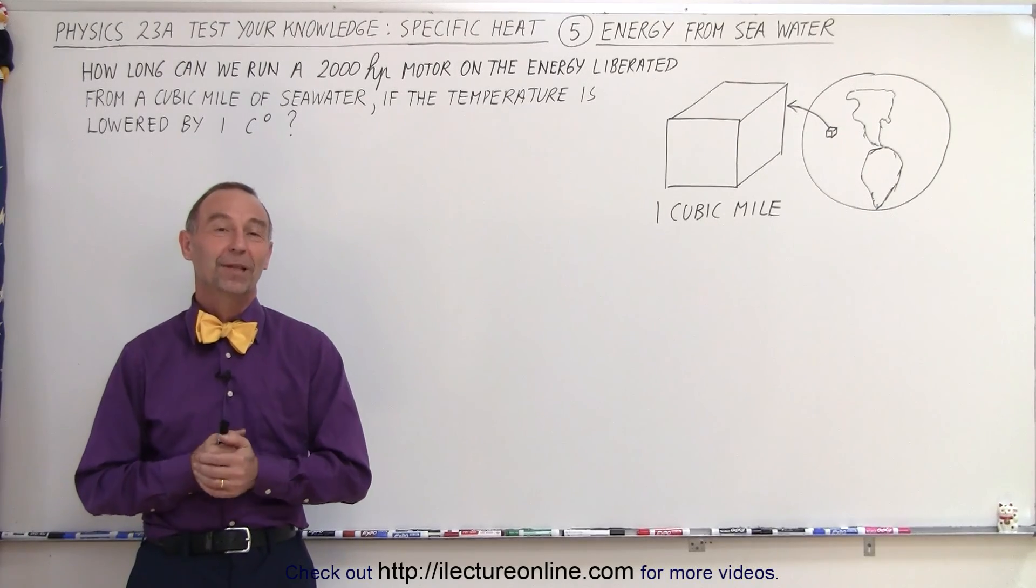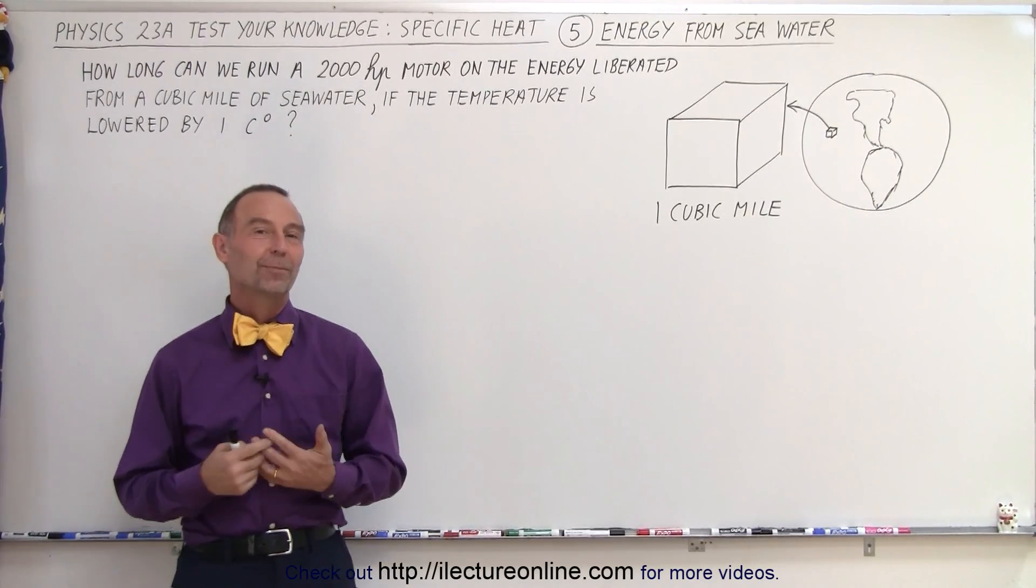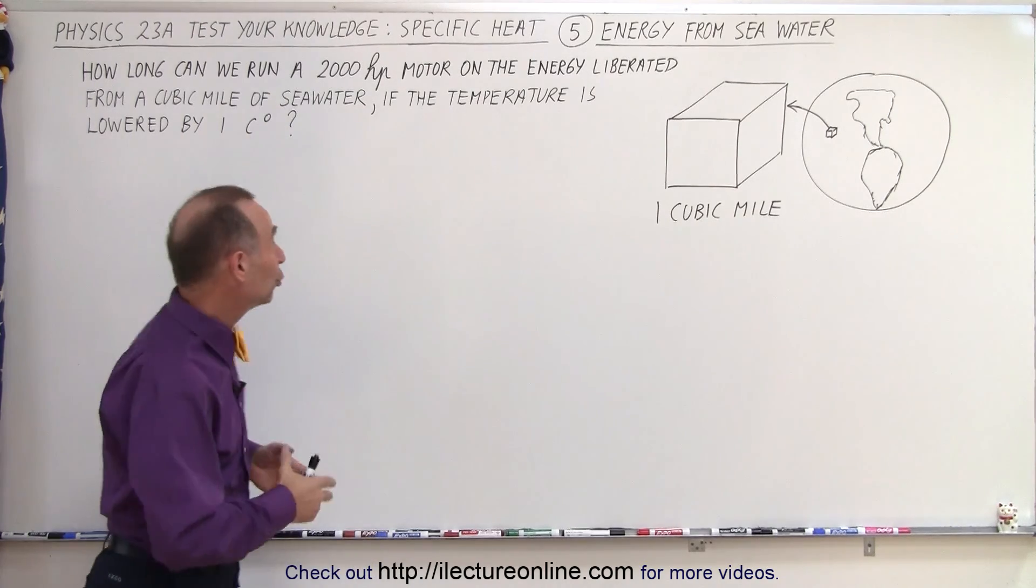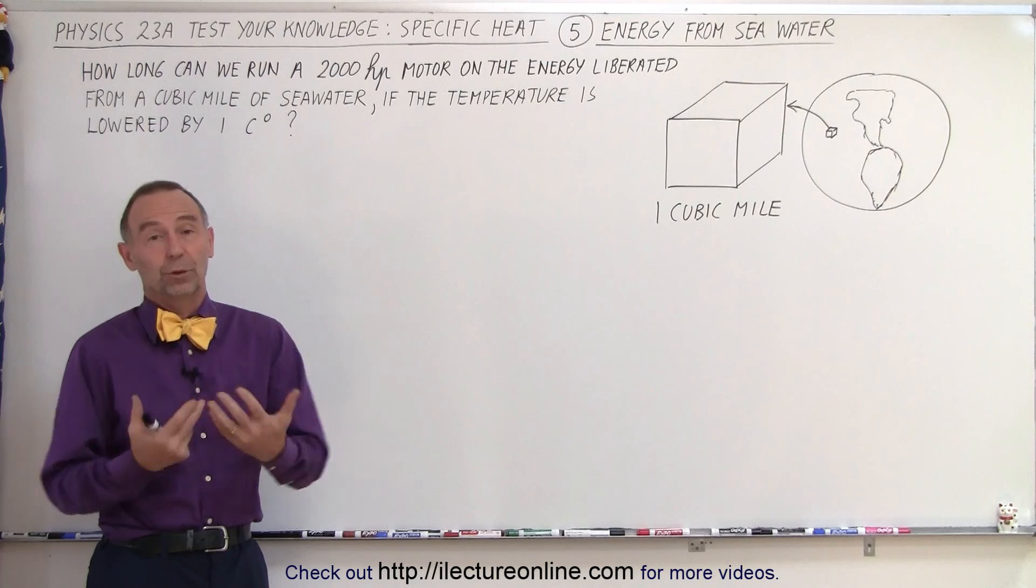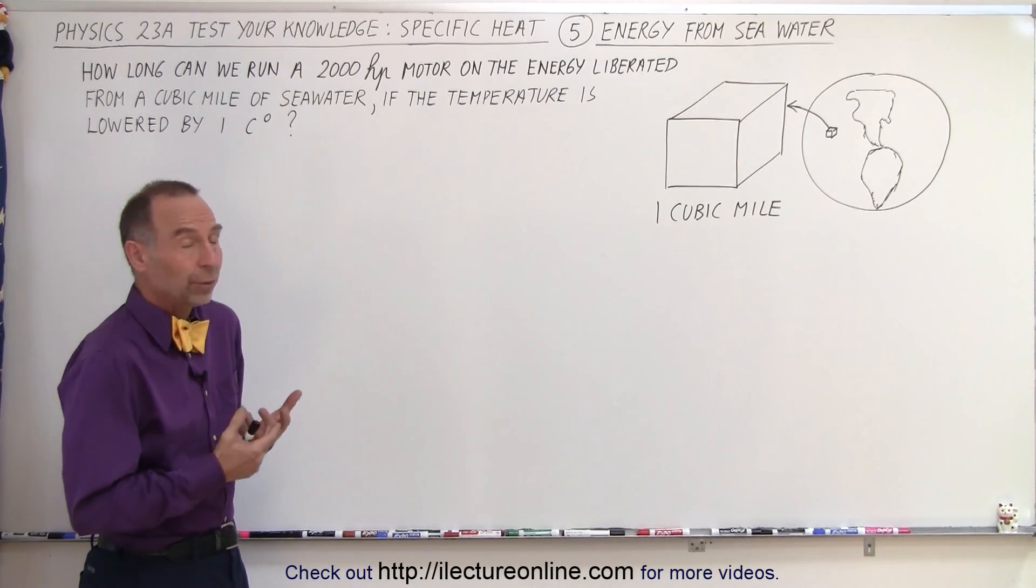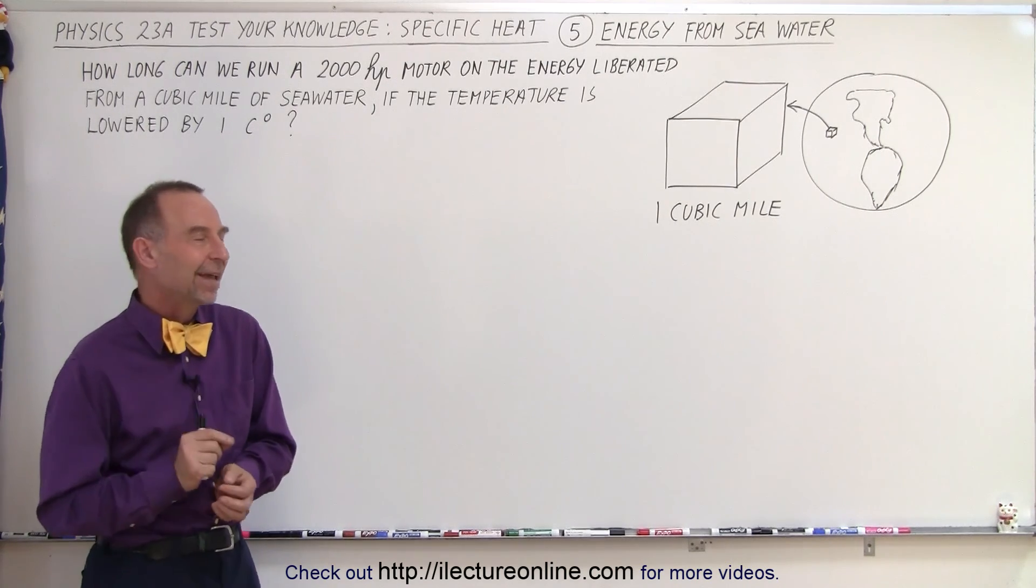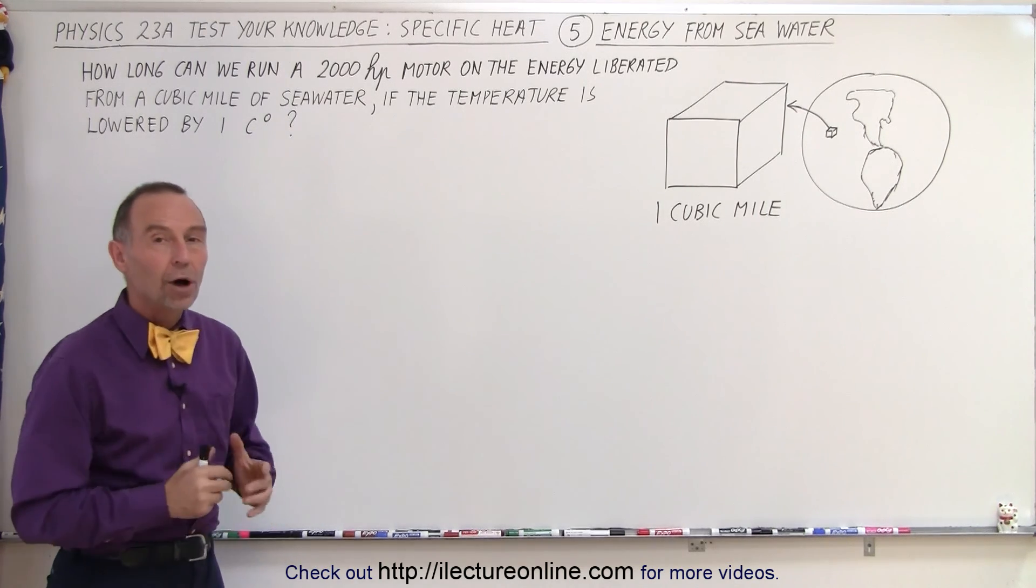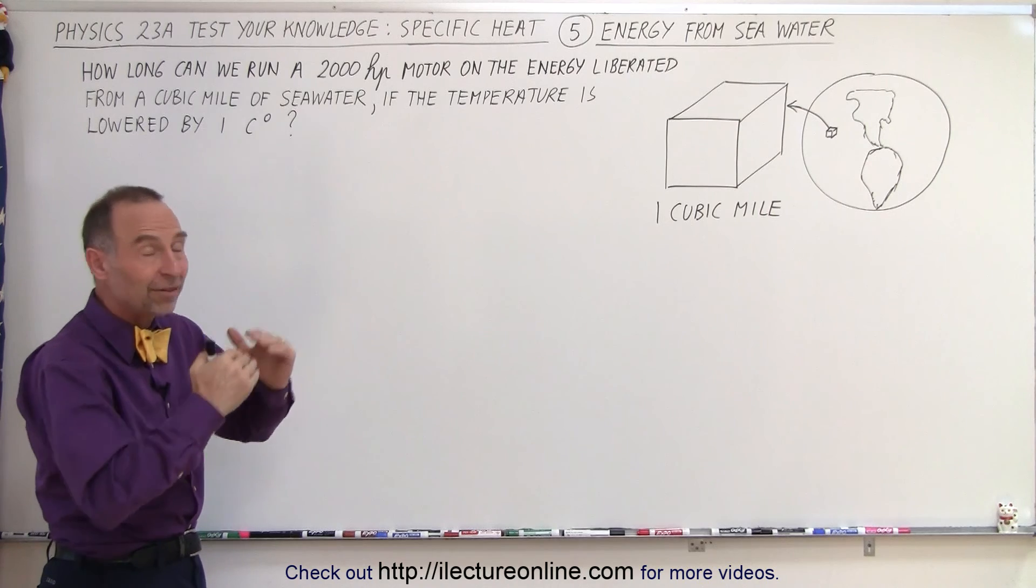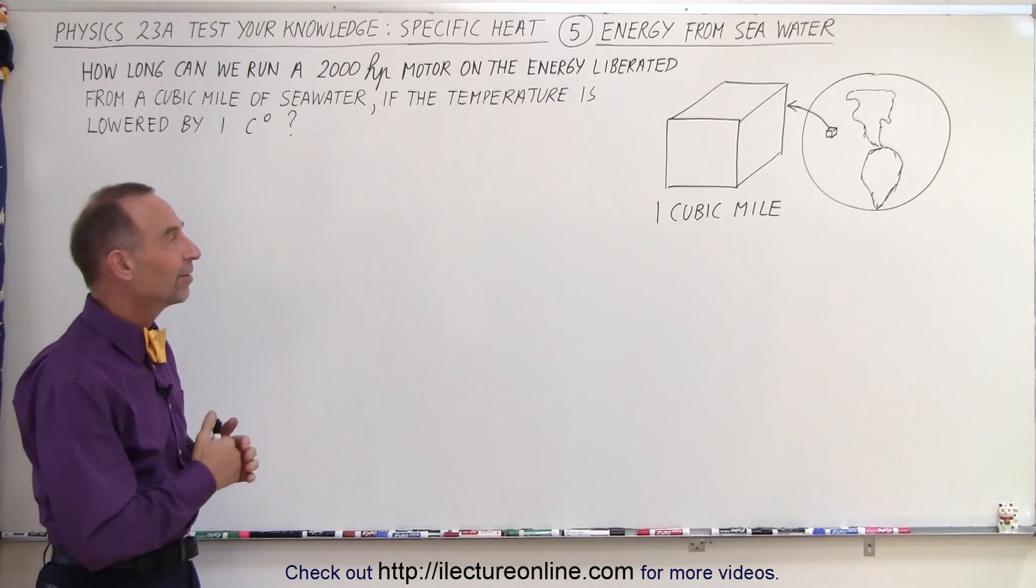Welcome to Electronline. Now here we have a very interesting problem. Let's say that we have a 2,000 horsepower motor and we need to run it. In order to run it we need energy. Where would that energy be coming from? Well let's say that we get the energy liberated from one cubic mile of seawater when we drop the temperature by one degree Celsius.